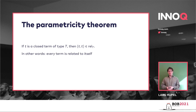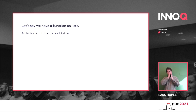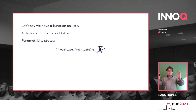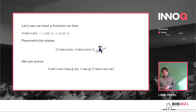That sounds really strange — every term is related to itself. What does it tell us? It sounds like a trivial theorem. Well, it actually has a lot of consequences. Let's make this more concrete. Say we have a function on lists called frobnicate: it takes a list of As and returns a list of As. This frobnicate function could shuffle the values, it could drop some values, but the important point is it returns the same kind of values as it received. The Parametricity Theorem says frobnicate is somehow related to itself according to some relation. The consequence is that we can prove that mapping something over the input of frobnicate is the same as running frobnicate first and then mapping — frobnicate and map can be swapped in this equation.